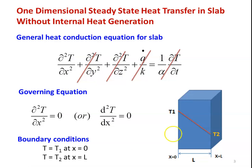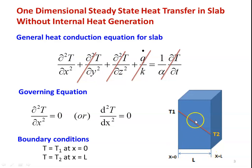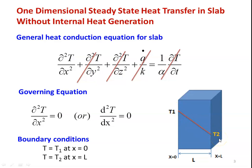We have to find the temperature distribution within this slab — how the temperature varies in the x direction from 0 to L at different values of x. For example, at x = 0 and x = L. In between, you take any value of x and calculate the temperature. T1 is higher, T2 is lower — it is decreasing, so a linear relationship exists. The temperature at different points of x is the temperature distribution.